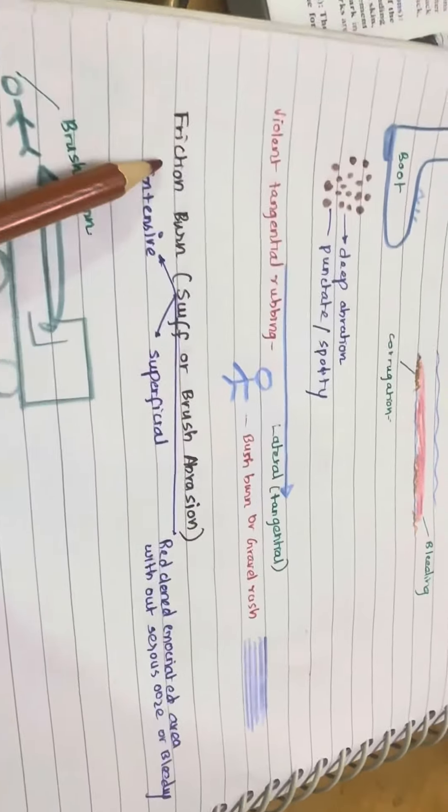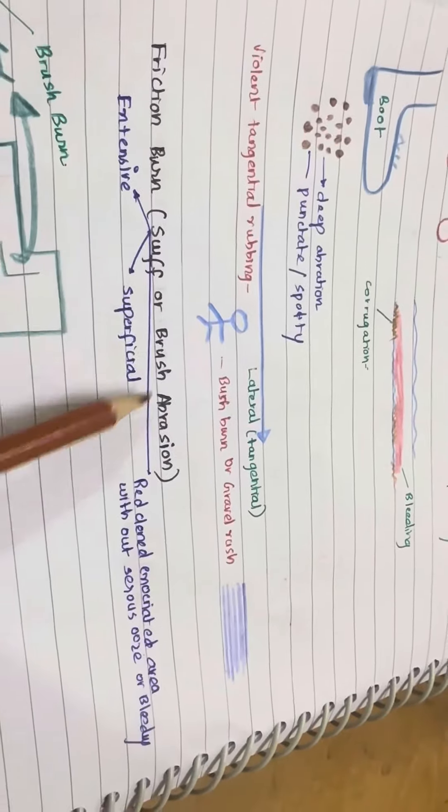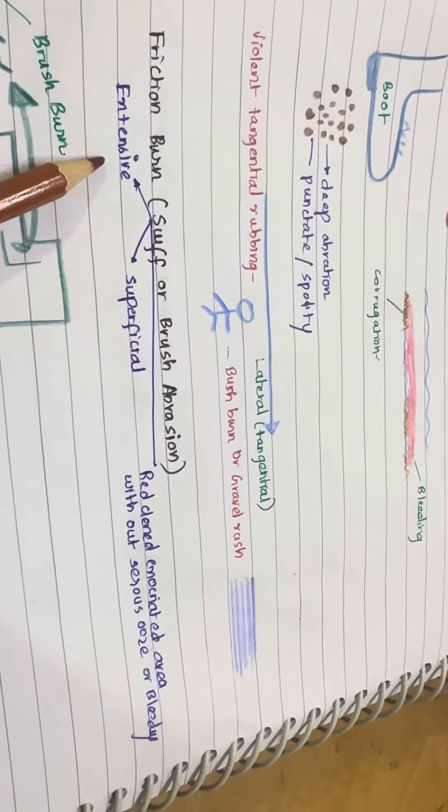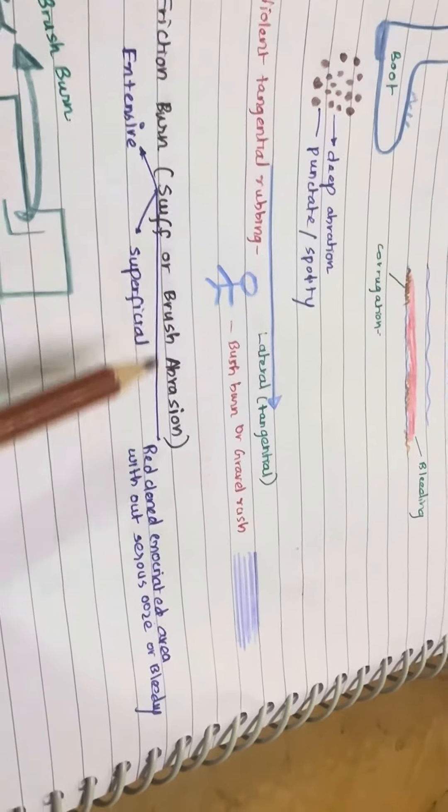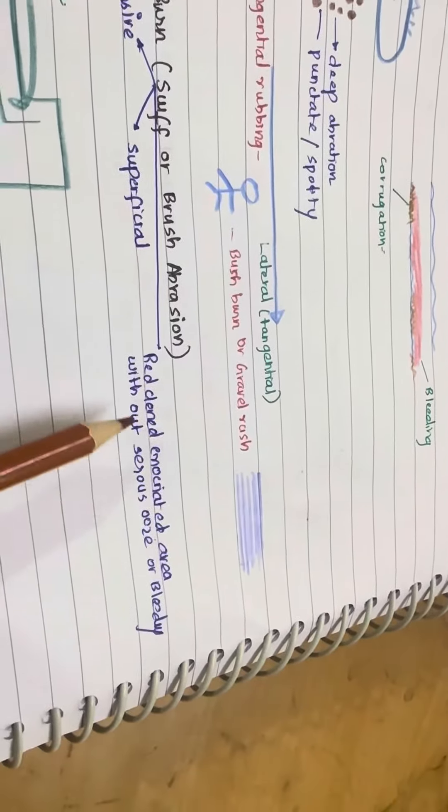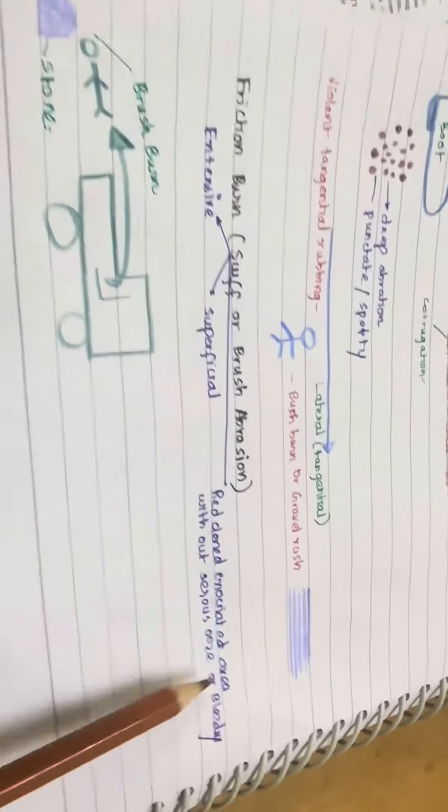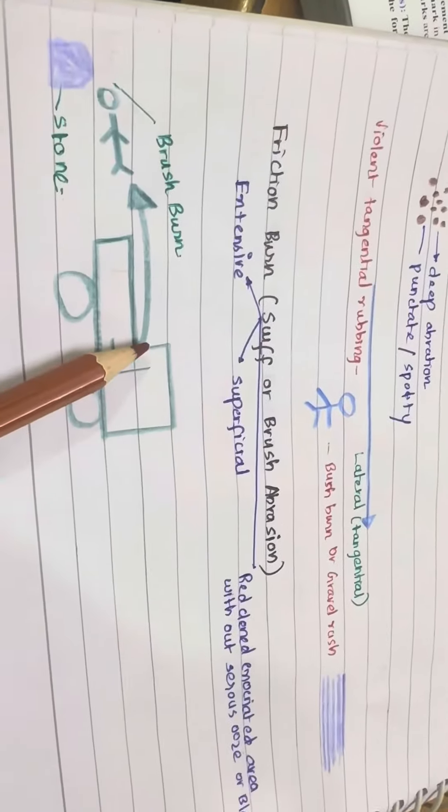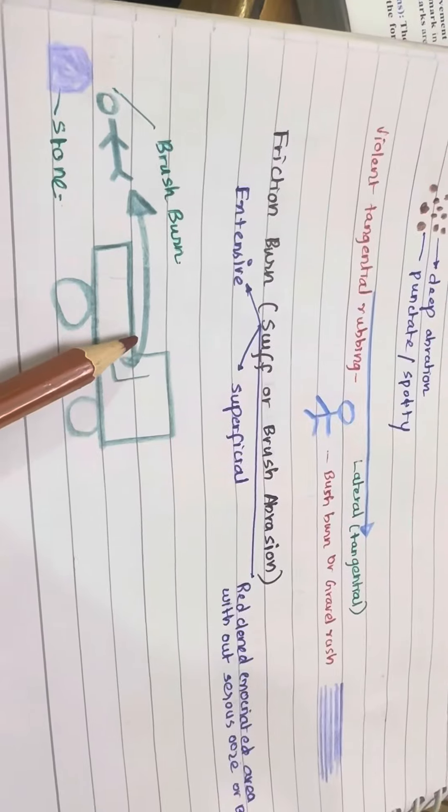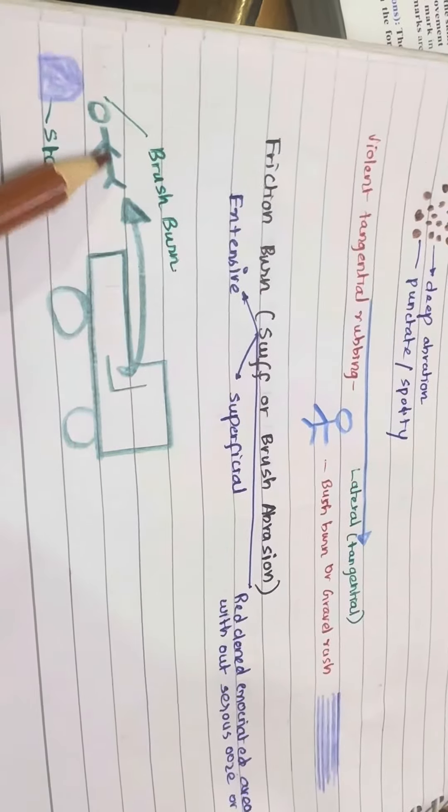Next is friction burn, or a scuff, or a brush burn. It will be extensive, superficial, reddened, excoriated area without serious bleeding. It can occur due to tangential contact with a smooth surface or when the skin is covered by clothing.